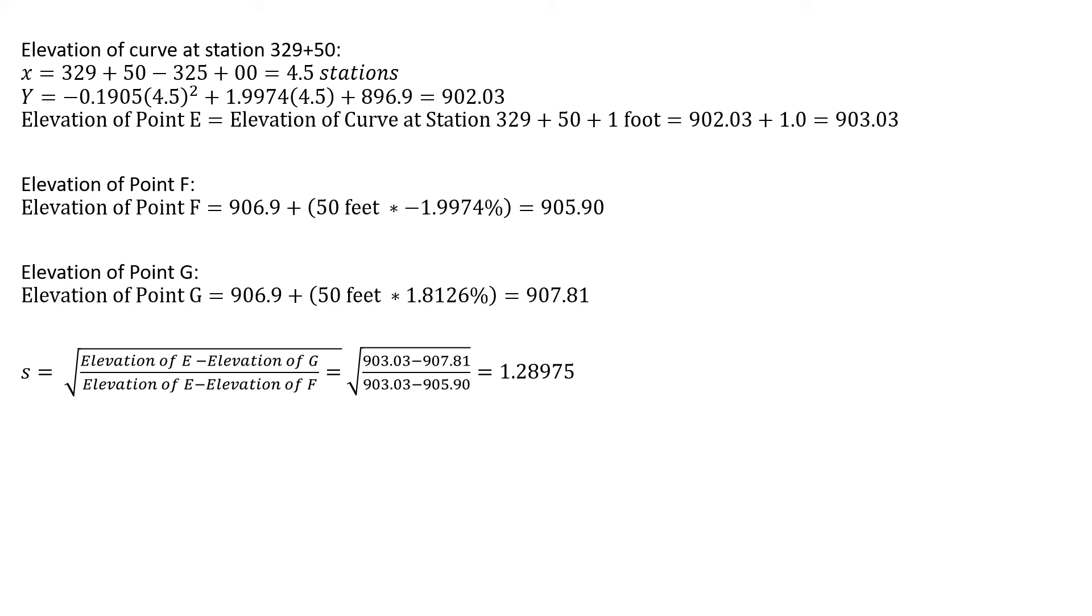Now we're going to be able to solve for S, which uses the elevation of E, F, and G. We're going to plug those in. We're taking the square root of those differences. So it's the square root of (903.03 minus 907.81) divided by (903.03 minus 905.9). Taking the square root of that gives us an S value of 1.28975. This S is just an intermediate value. It doesn't really mean much in terms of the design, but we're going to use this for calculating the L.